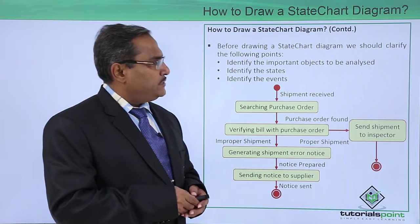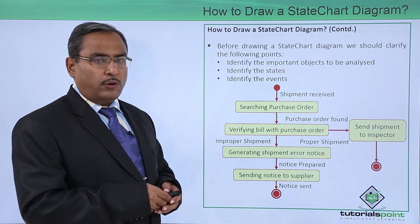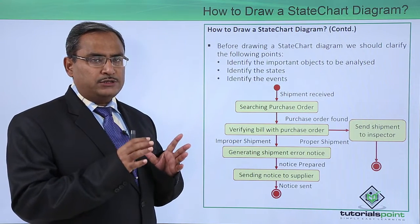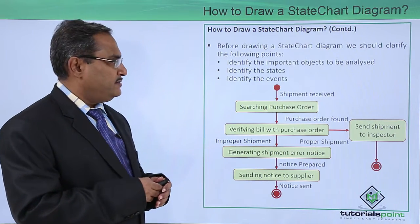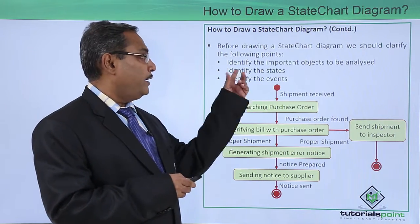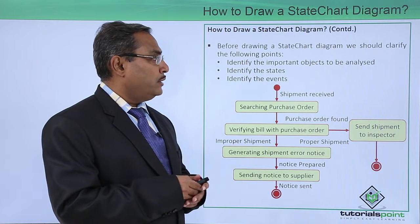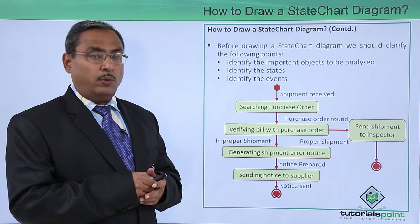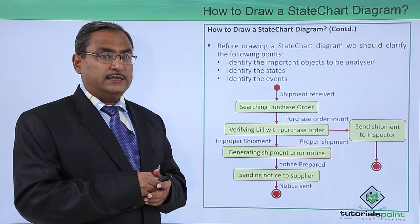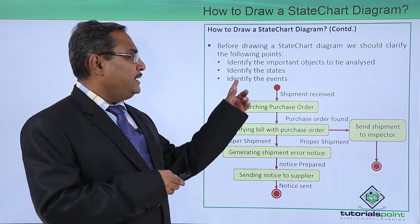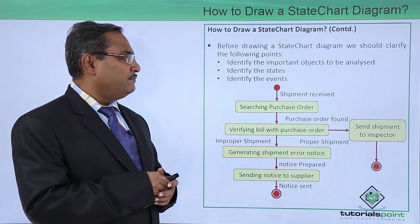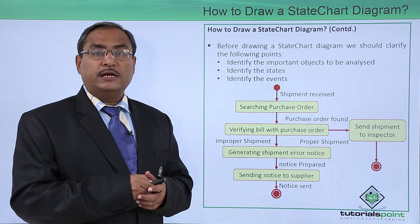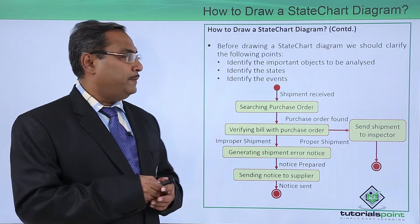Before drawing a State Chart Diagram, we should clarify the following points. These are the list of points we should have clarification at first. Identify the important objects to be analyzed. What are the objects for which the State Chart Diagrams are to be formed? Identify the respective states of that object and identify the events for which the state transition will take place.